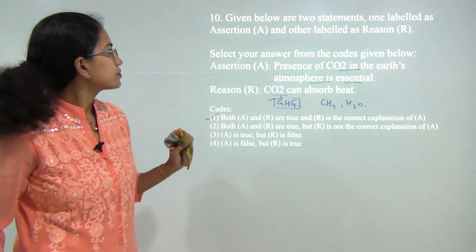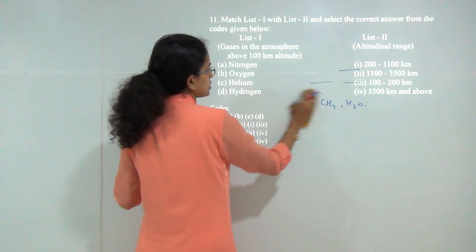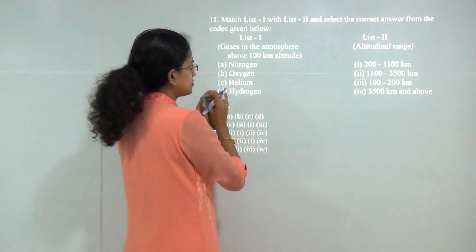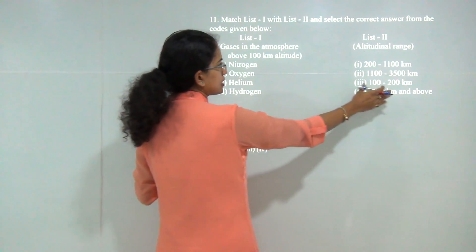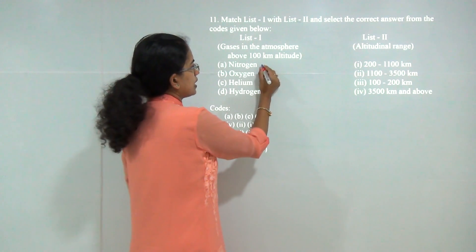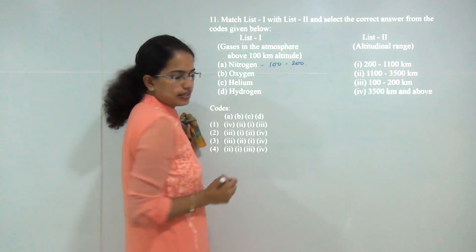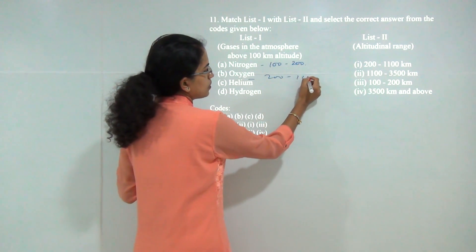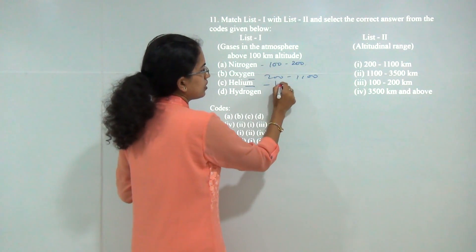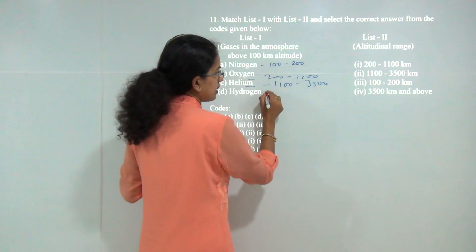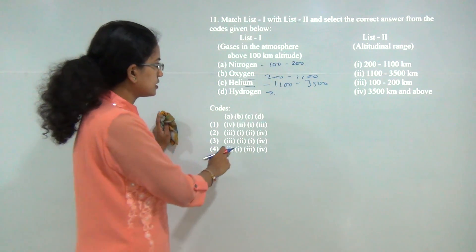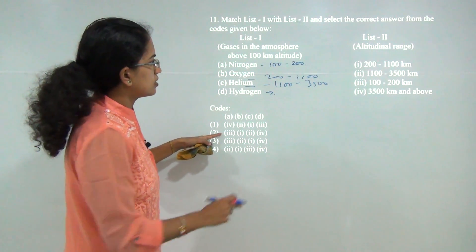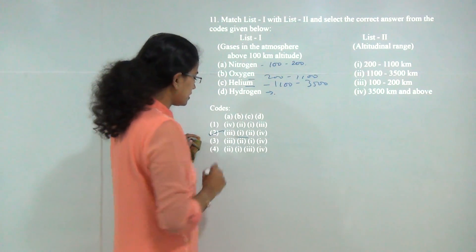Next question: you have to match the element with its range of altitude. Nitrogen occurs in around 100 to 200 kilometers. Then you have oxygen from 200 kilometers onward. Then you have helium from 1000 to 3500 kilometers, and above that you have hydrogen. So that is the correct match — 3, then 1 — and this would be the correct option.